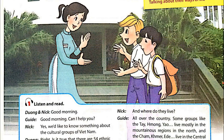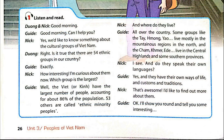Good morning! Good morning. Can I help you? Yes, we'd like to know something about the cultural groups of Vietnam. Right. Is it true that there are 54 ethnic groups in our country? Exactly. How interesting. I'm curious about them now. Which group is the largest? Well, the Viet, or Kinh, have the largest number of people, accounting for about 86% of the population. The 53 others are called ethnic minority peoples.